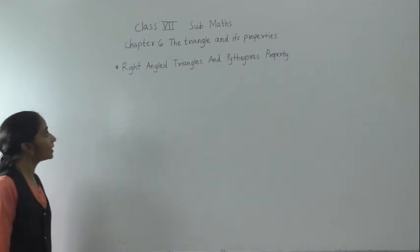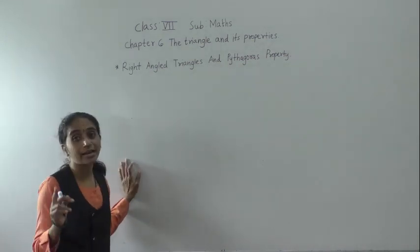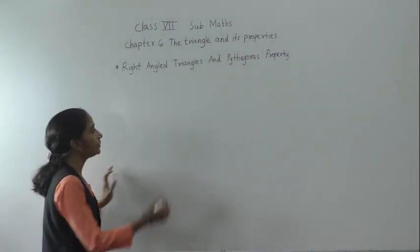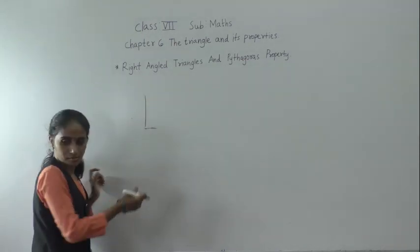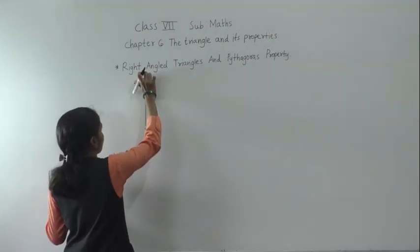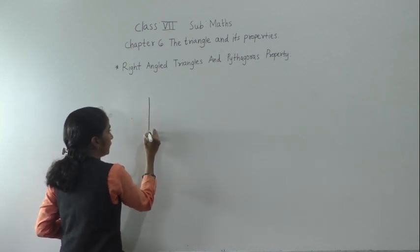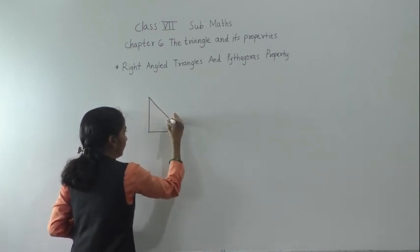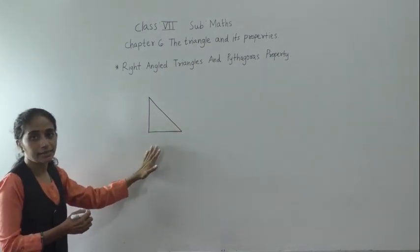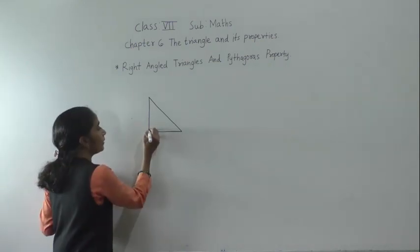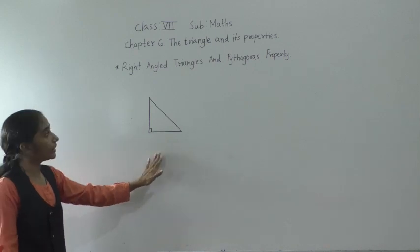Hello students, let's start right angle triangles and Pythagoras property. First, you should know what is a right angle triangle. In a triangle, if any one of the angles is 90 degrees, then that triangle is called a right angle triangle. This is a 90 degree angle, so this triangle is called a right angle triangle.